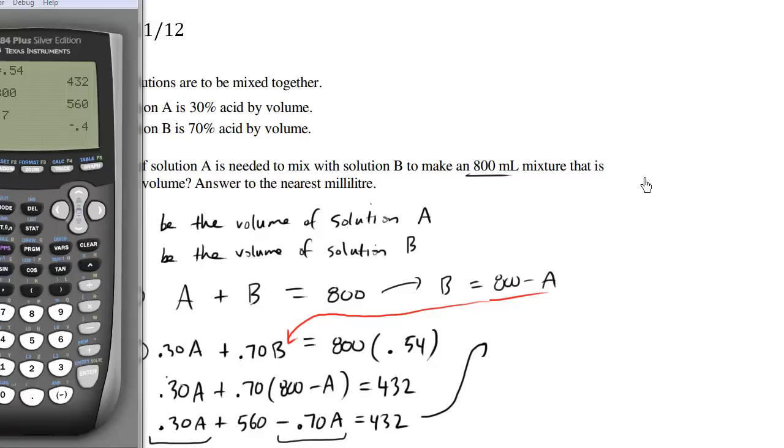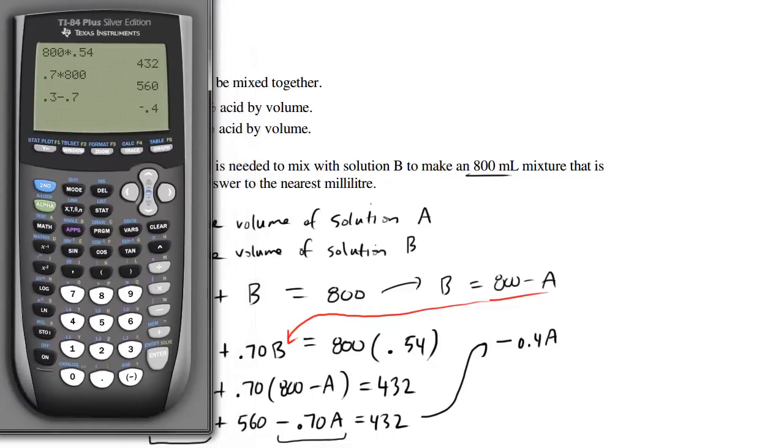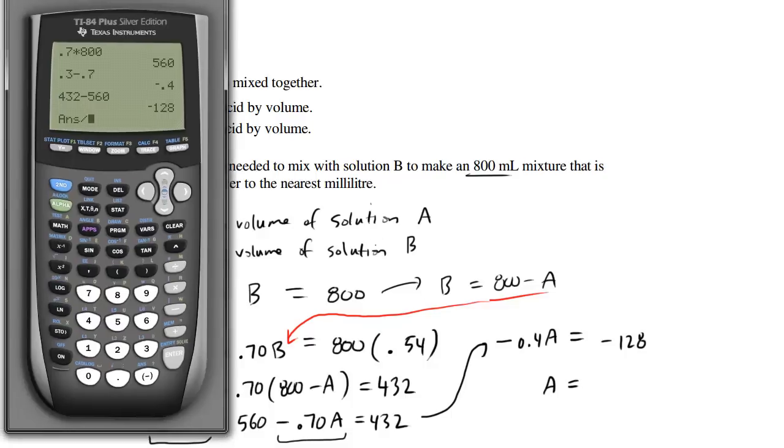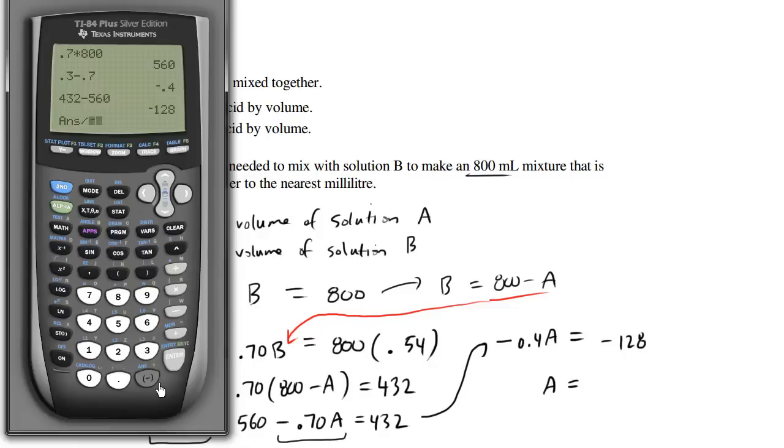We have negative 0.4A and then we're going to subtract both sides by 560. So we have 432 minus 560, which equals negative 128. I'm going to divide both sides by negative 0.4 to solve for A. So negative 128 divided by negative 0.4 equals 320.